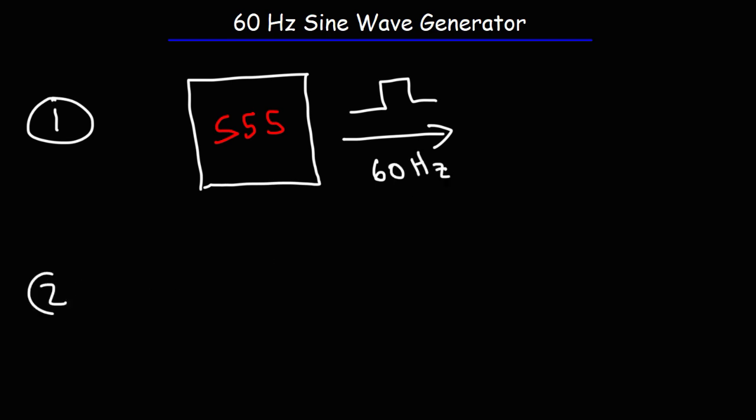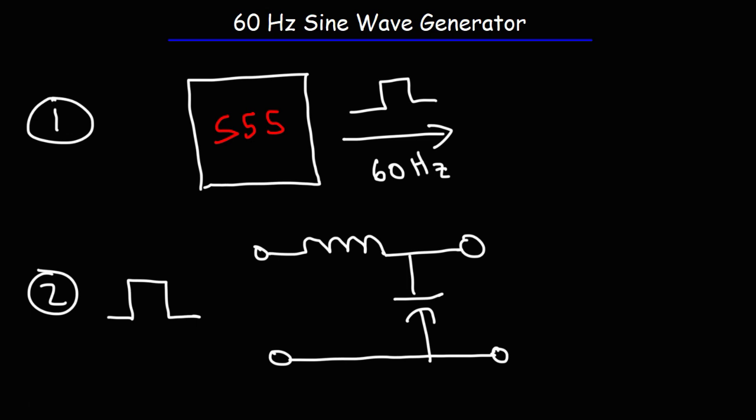Now the second step is to convert the square wave into a sine wave. And one way you can do this is by using an LC network, a network that contains an inductor and a capacitor in this configuration. So L is a symbol for the inductor, C is for the capacitor. And then at the output if you choose the appropriate values of L and C you can get a sine wave.